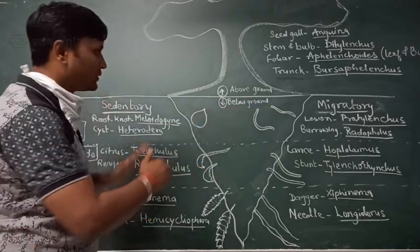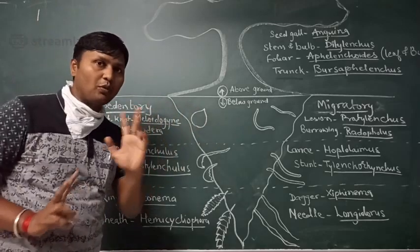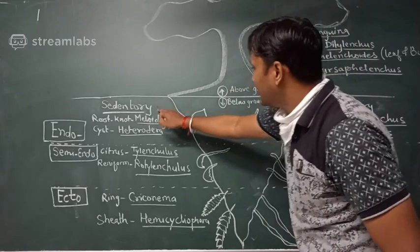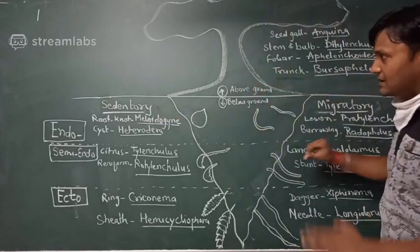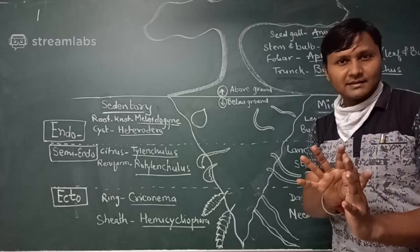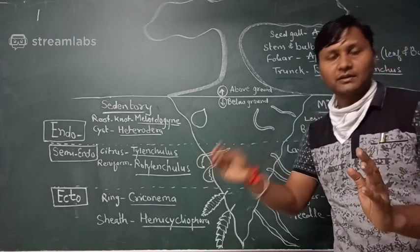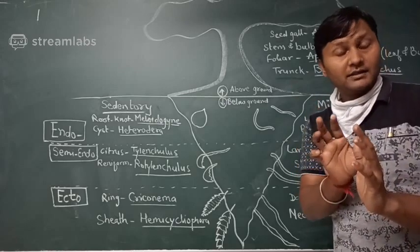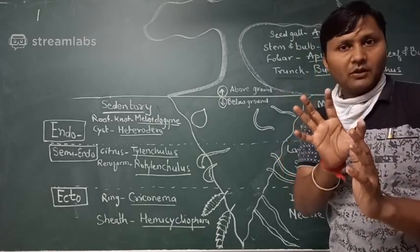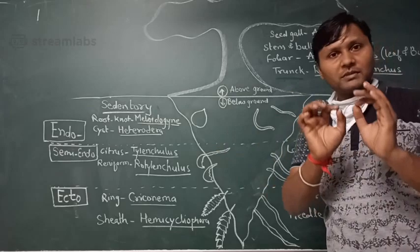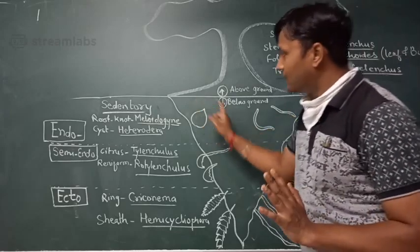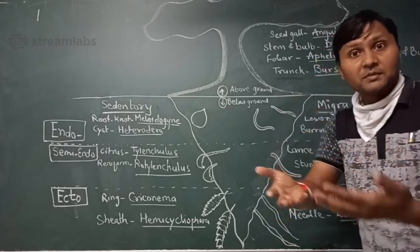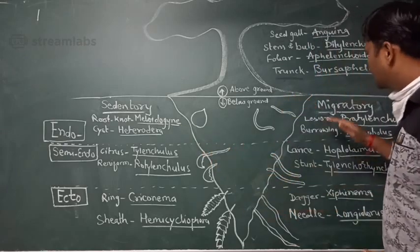Below ground feeder nematodes can be categorized into two broad groups: sedentary and migratory. Sedentary nematodes feed from one fixed place — they cannot move from one place to another and create a feeding site near their mouth parts. Migratory nematodes, on the other hand, move from one place to another for feeding purposes.